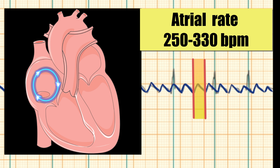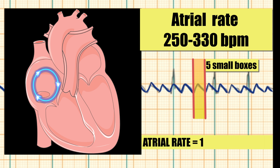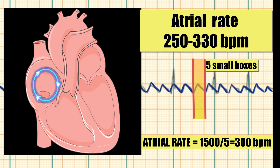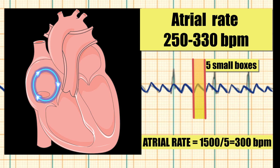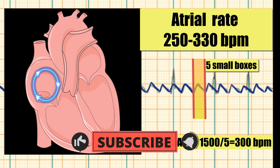To calculate the rate, measure the distance between the sawtooth waves, which is equal to 5 small boxes. We use the same formula as for heart rate calculation. The rate of sawtooth waves is 300 beats per minute, which is consistent with atrial flutter.